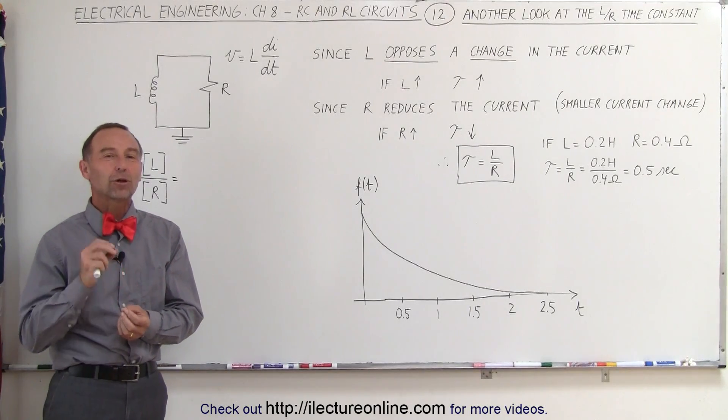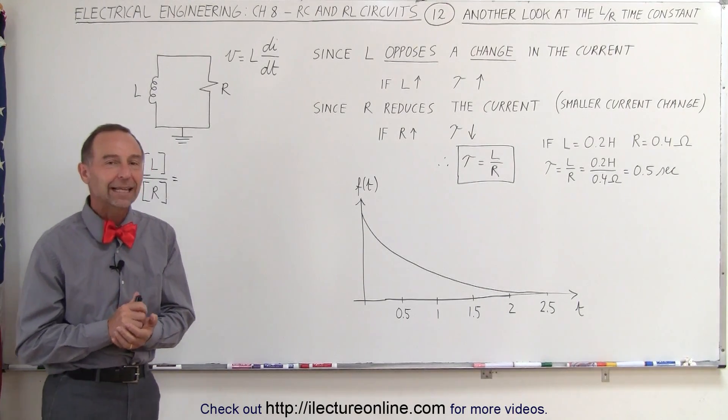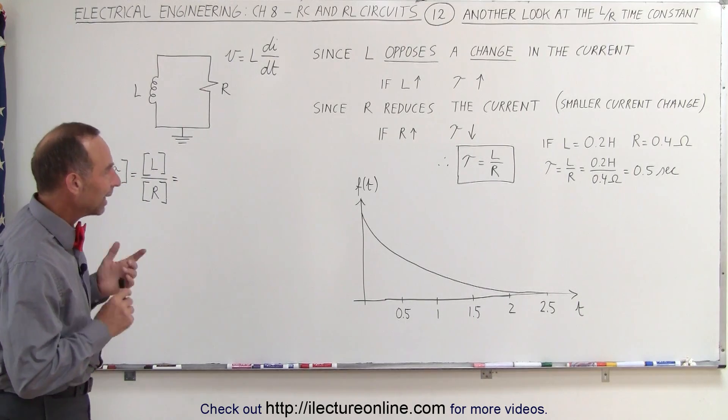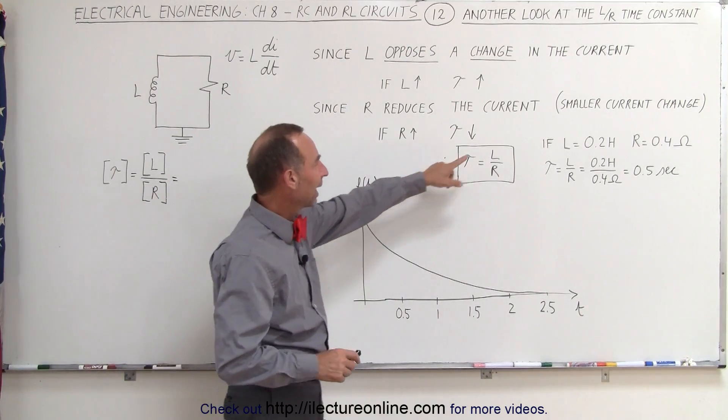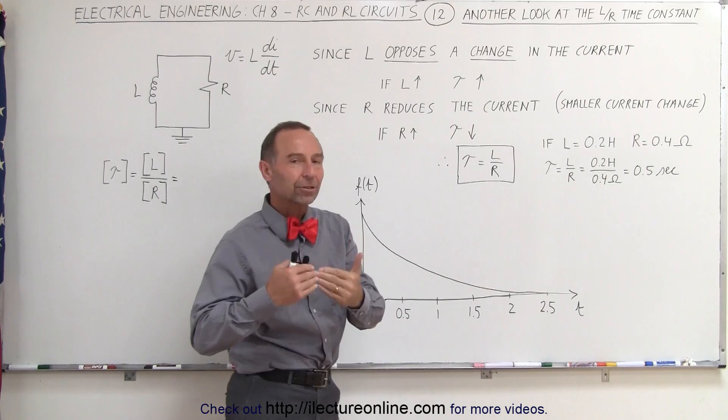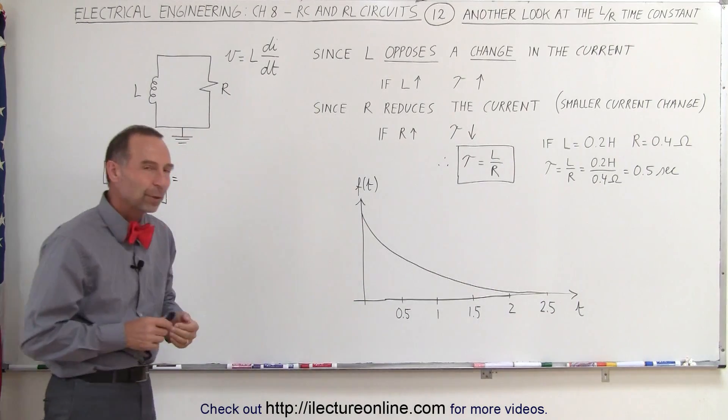Welcome to Electronline. Let's take a closer look at the time constant in an LR circuit. In an LR circuit, the time constant is L divided by R, the inductance divided by the resistance. Why is that?